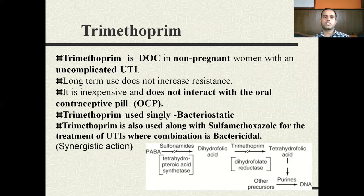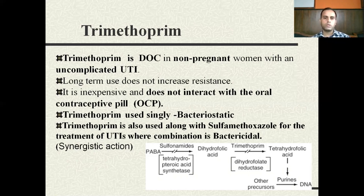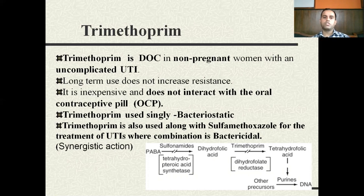Trimethoprim is the drug of choice in non-pregnant women with uncomplicated urinary tract infection. Long-term use does not increase resistance, which is another reason it is preferred. It is inexpensive and does not interact with the oral contraceptive pill, which is an important consideration. When used singly, trimethoprim is bacteriostatic — it inhibits bacterial growth and relies on the host immune system to clear the bacteria. However, when used in combination with sulfamethoxazole, the combination becomes bactericidal through synergistic action.